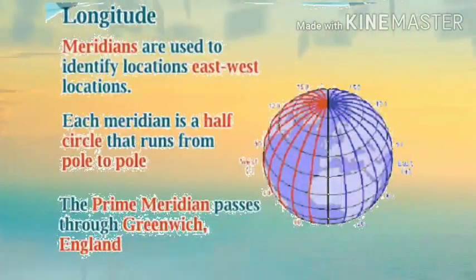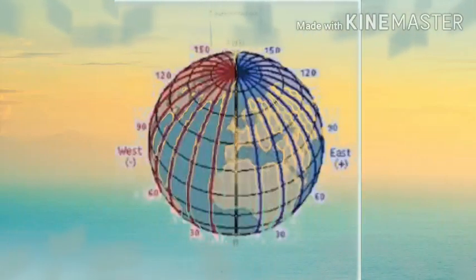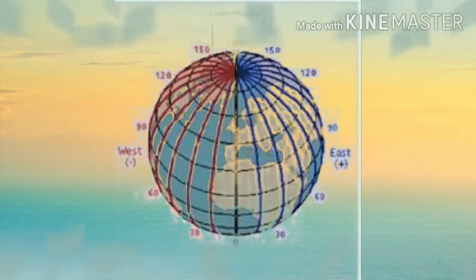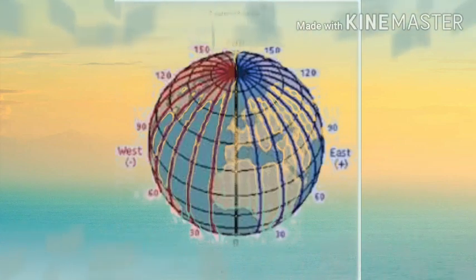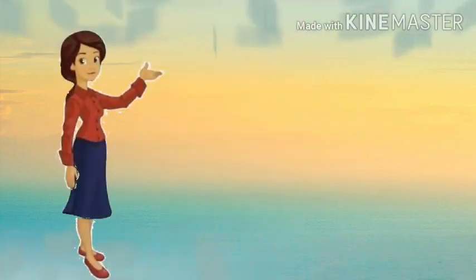Longitudes are of an equal length. They are measured in degrees. The zero degree longitude is called the prime meridian. It passes through Greenwich near London.